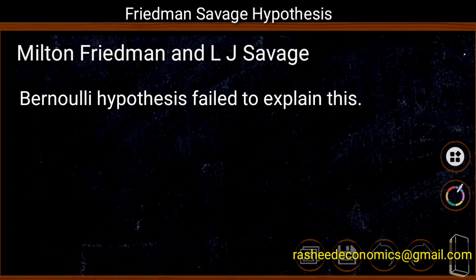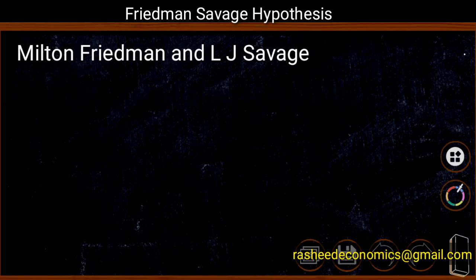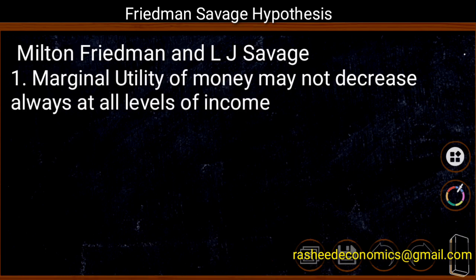The analysis developed by Daniel Bernoulli failed to explain these complex situations. Thus, Milton Friedman and L.J. Savage deviated from the analysis developed by Daniel Bernoulli. According to Friedman and Savage, the marginal utility of money may not decrease always — it is not decreasing at all levels of income. They introduced a more realistic and convincing method of measuring marginal utility of money.